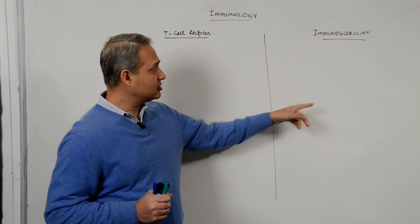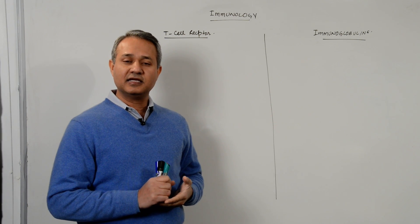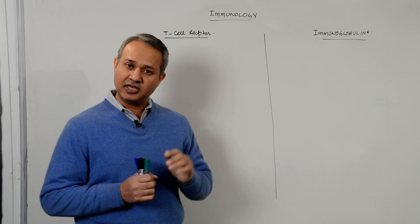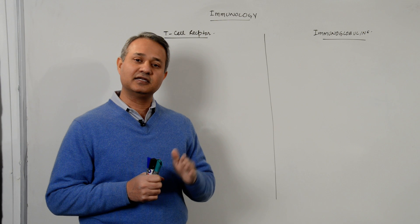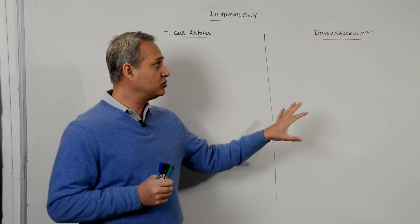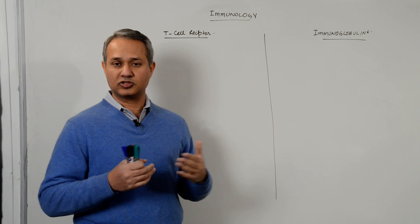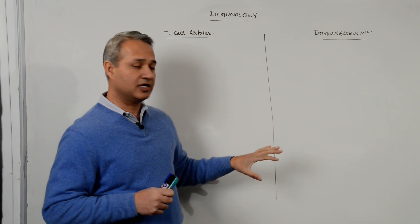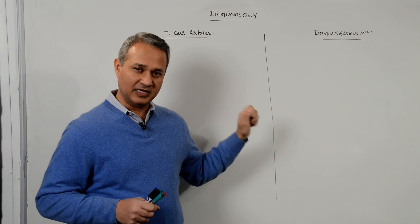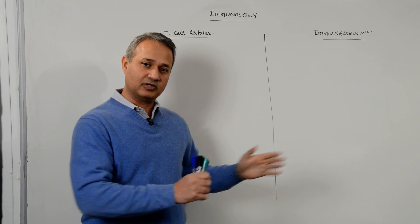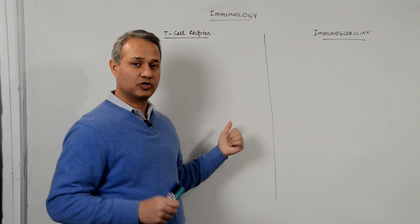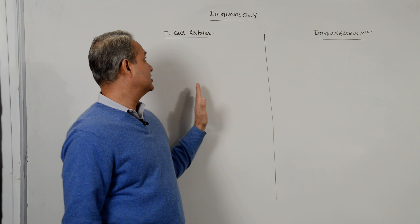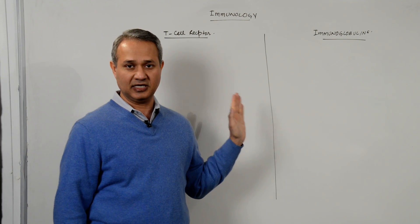I have also put the immunoglobulins here because the T cell receptor has a great resemblance — functionally, structurally, and in terms of creation — to immunoglobulins. They are almost similar, and then there are some differences as well. I put them over here. We will talk about immunoglobulins later on, but here we would create a foundation which will be useful for immunoglobulins as well as for the T cell receptor lecture today.